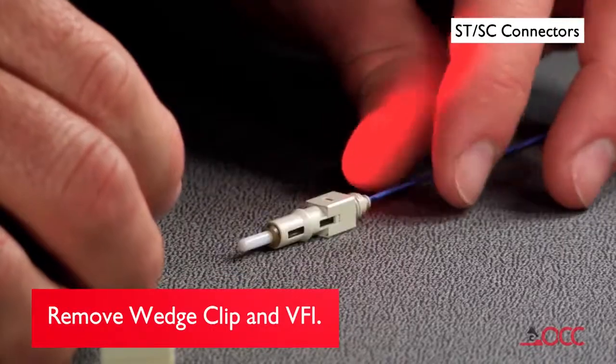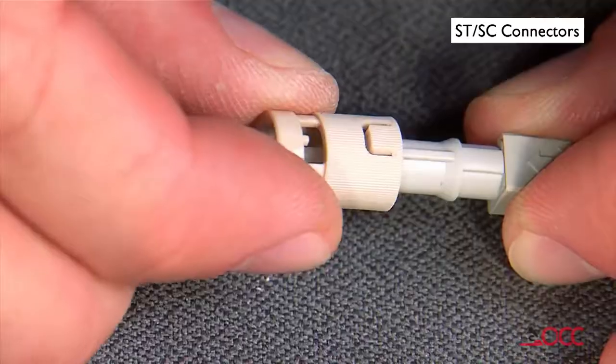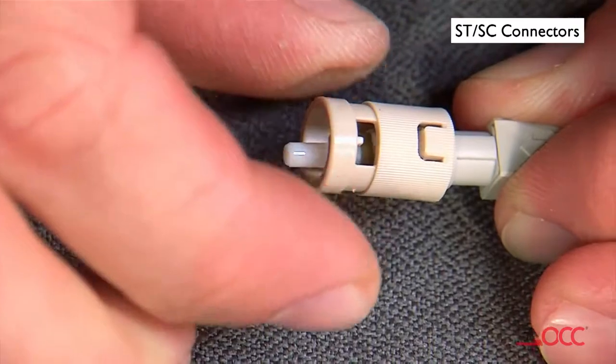Release the wedge clip by squeezing both sides until the wedge clip dislocates itself from the connector body. Remove the wedge clip. Remove the VFI from the connector.